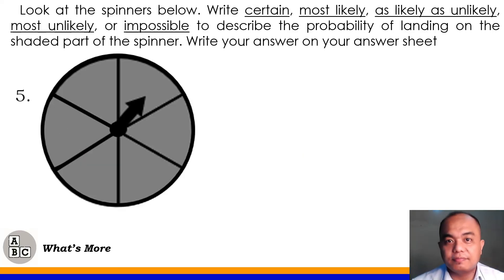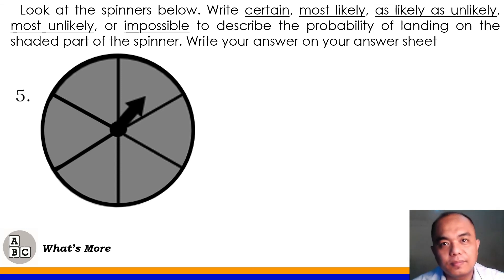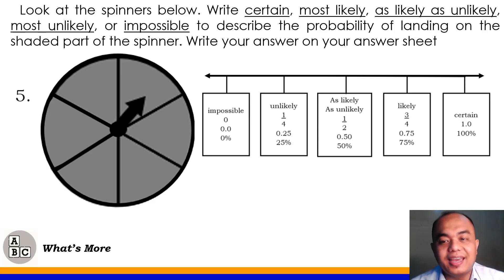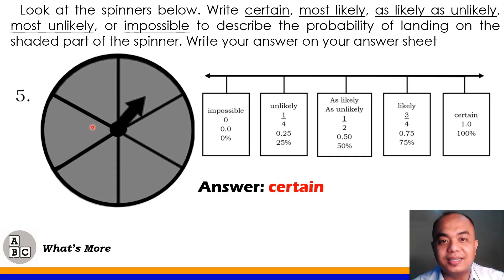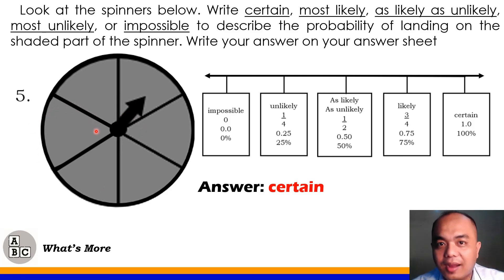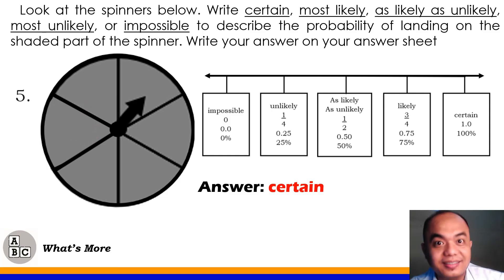Number 5. What is the probability that the shaded part will come up in our spinner? Obviously, that's certain — 100%. Why? Because all the parts of our spinner are shaded. For sure, when the pointer spins, it will definitely land on a shaded part. That's 100%.